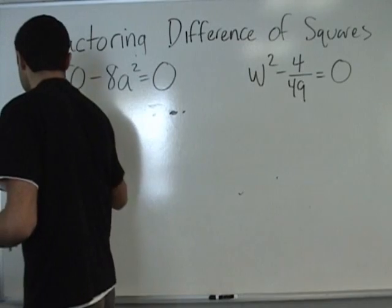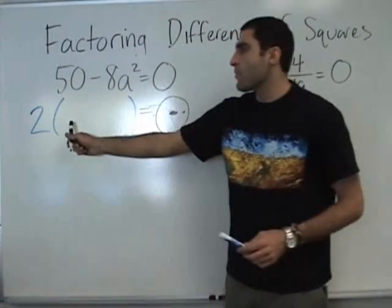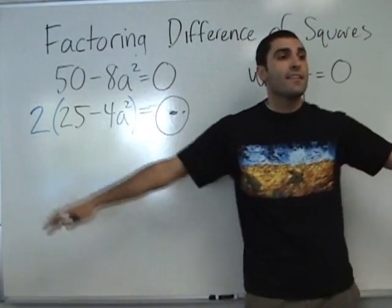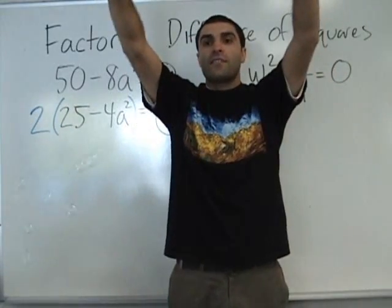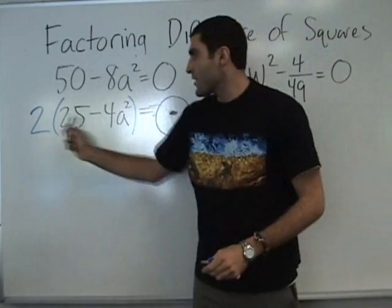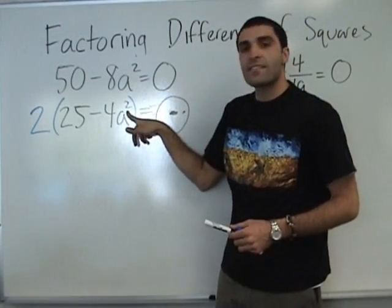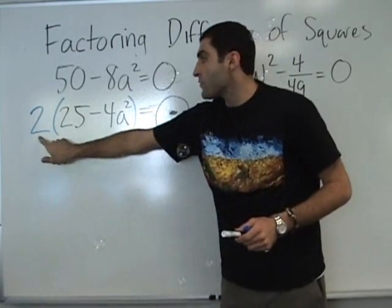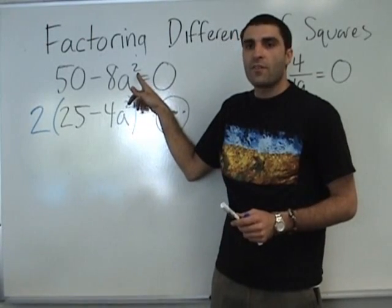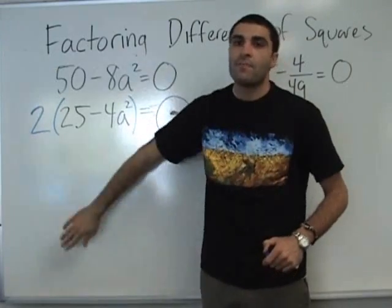Time to bring 2 out — undistribute 2. Two times what? Twenty-five. So 25 goes here and 4a squared. Does anything look familiar? Would it be 4a squared? Yes, it is 4a squared. Distribute: 2 times 25 is 50; 2 times negative 4a squared is negative 8a squared. Can you do it backwards? That's factoring.